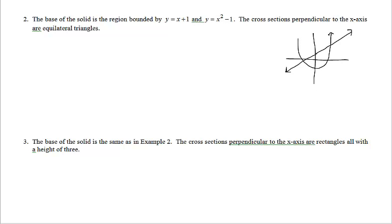y = x + 1 and y = x² − 1. Notice this problem has two equations creating the base region, and these two equations form a naturally bounded region. The cross sections are perpendicular to the x-axis, and the face of those cross sections is going to be equilateral triangles. The area formula for an equilateral triangle is A = (√3/4)s², which starts like the square formula but multiplies s² by √3/4 — just a constant multiplier on s².